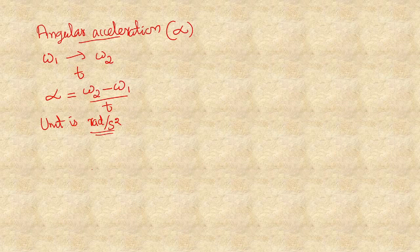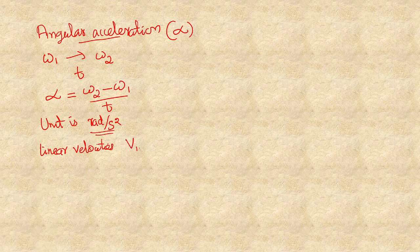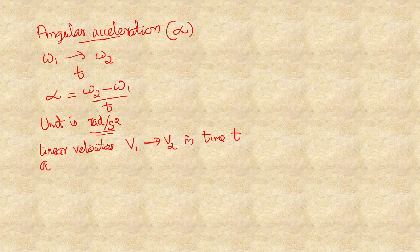Now let us find the relation between linear acceleration and angular acceleration. Suppose during the time T, the linear velocity changes from V one to V two. The linear acceleration A equals (V two minus V one) divided by T, as we studied in the last semester.